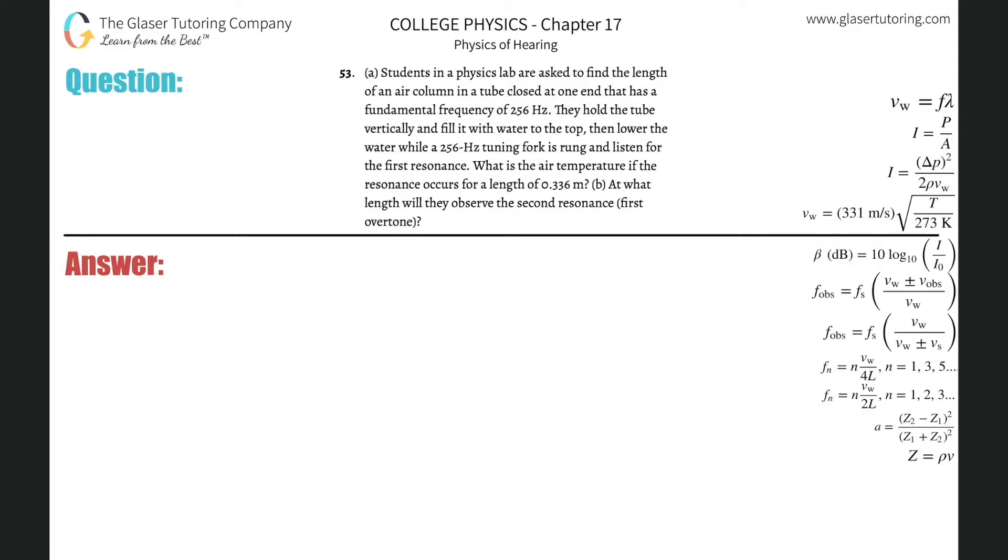Number 53, letter A. Students in the physics lab are asked to find the length of an air column in a tube closed at one end that has a fundamental frequency of 256 hertz. They hold the tube vertically and fill it with water at the top, then lower the water while a 256 hertz tuning fork is rung and listen to the first resonance.